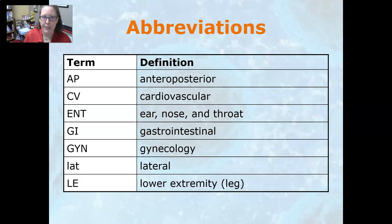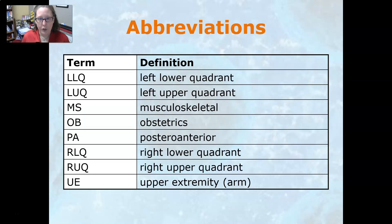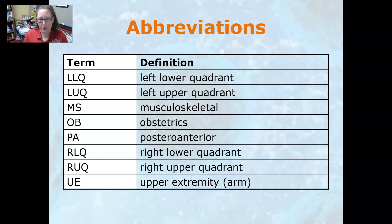Now let's look at some abbreviations. AP is anterior-posterior; CV is cardiovascular; ENT is ear, nose, and throat; GI is gastrointestinal; GYN is gynecology; LAT is lateral; LE is lower extremity, usually referring to the leg; LLQ is left lower quadrant; LUQ is left upper quadrant; MS is musculoskeletal; OB is obstetrics; PA is posterior-anterior; RLQ is right lower quadrant; RUQ is right upper quadrant; UE is upper extremity. That wraps up our abbreviations — I'll see you in the next video.